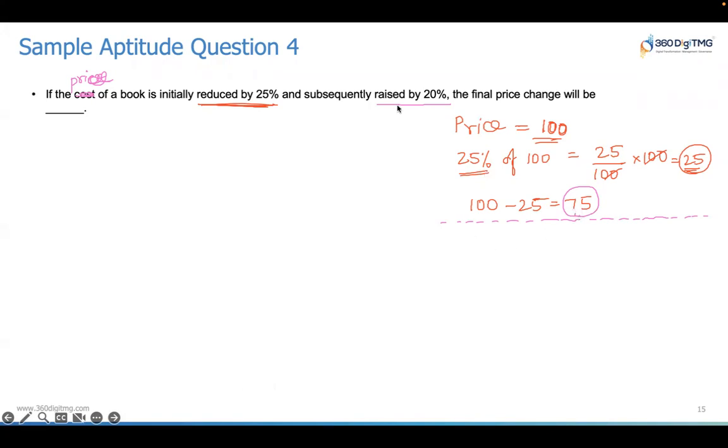So now, we have 75. If you raise it by 20%, that will be 20% of 75. And what will be 20% of 75? 20 divided by 100 into 75. 15. When you actually solve it, you get 1 by 5. And if you divide this by 5, you get 15. 15 rupees will be 20% of 75 rupees.